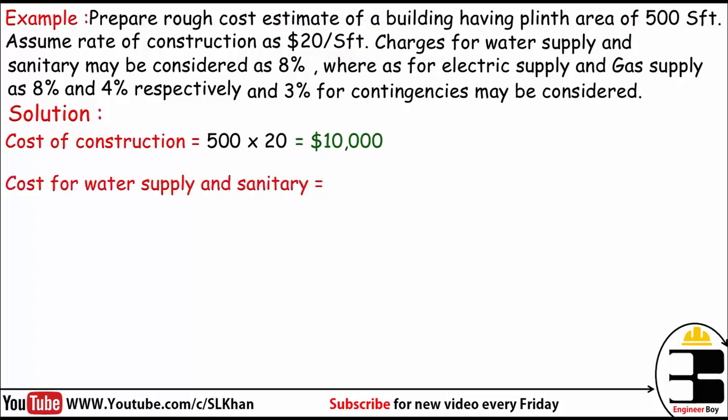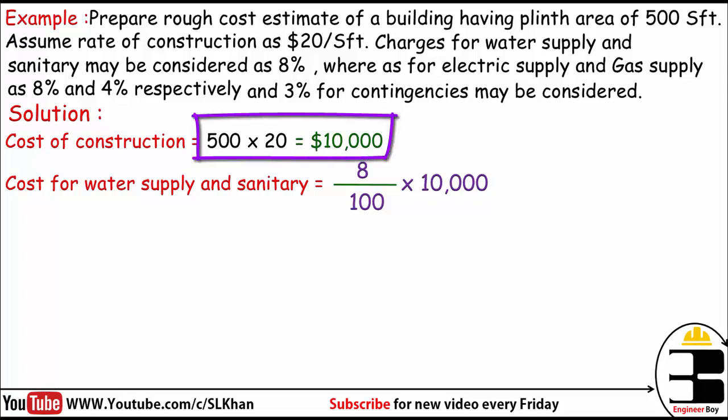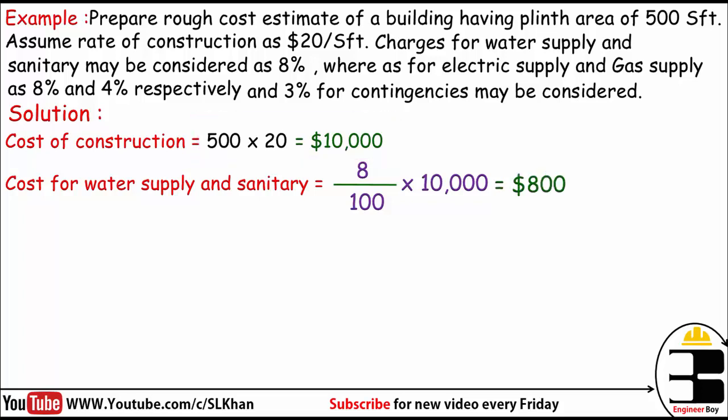The cost for water supply and sanitary is 8%. To remove the percent sign, we divide by 100. So if it is 8 in 100, then how much should it be in $10,000, which is the total cost of construction? We get $800 for the cost of water supply and sanitary.